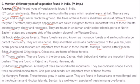Thorny bushes are found in dry areas; cactus, kher, babul, and keekar are important thorny bushes, found in Rajasthan, Punjab, and Haryana. Mountain vegetation: a variety of trees are found in mountains, conical in shape — called coniferous trees. Chir, pine, and deodar are important trees of mountain forests.